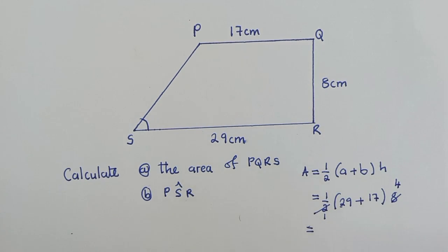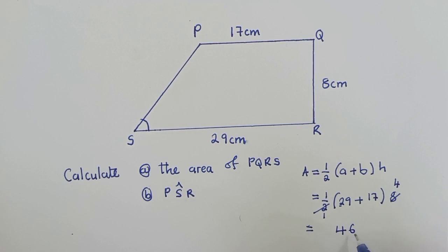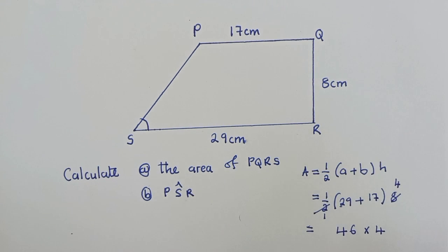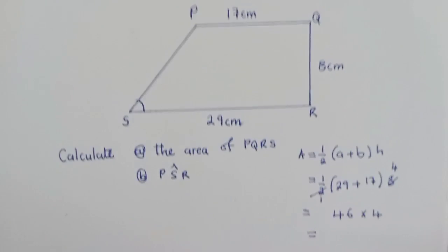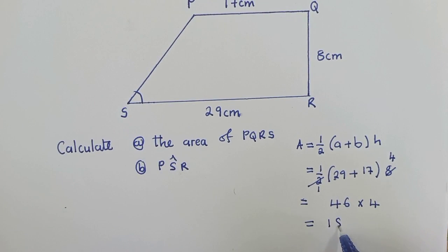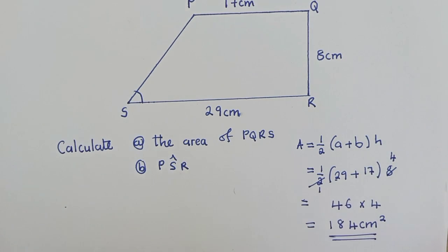Here when we add, what are we getting? 29 plus 17, what are we getting? We're getting 46 times 4. This 4 right here. So what is 46 times 4? That is 184. So we're getting 184 centimeters squared. So this is one of our solutions for A.